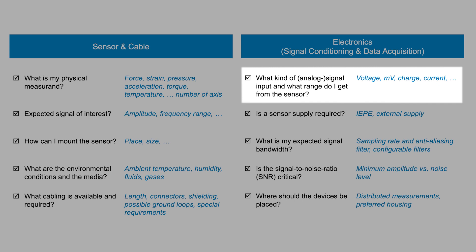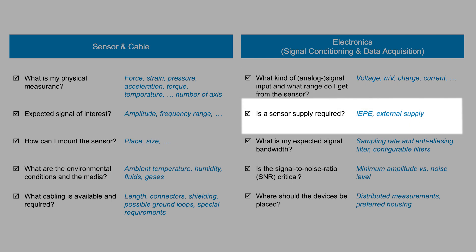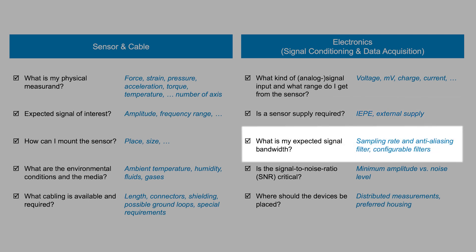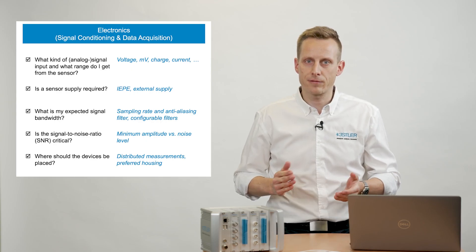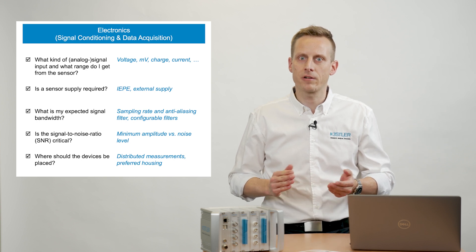On the electronic side: what is the electrical signal from the sensor, and what is the range? Do I need special amplification, like for strain gauges or piezoelectric sensors? Is it an active sensor which needs powering — for example IEP sensors or piezo-resistive transmitters? Depending on the expected signal bandwidth, which sampling rate makes sense? Higher is better, yes, but it also creates a lot of data — therefore, select a feasible value for your application.